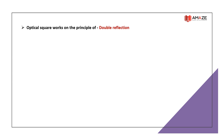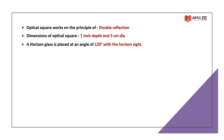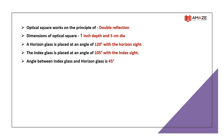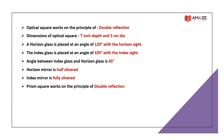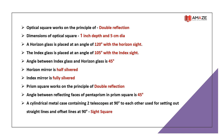An optical square works on the principle of double reflection. A prism square uses a prism instead of mirrors. The angle between the reflecting faces of the penta prism in a prism square is 45°. A cylindrical metal case containing two telescopes at 90° to each other, used for setting out straight lines and offsets at 90°, is called a site square.